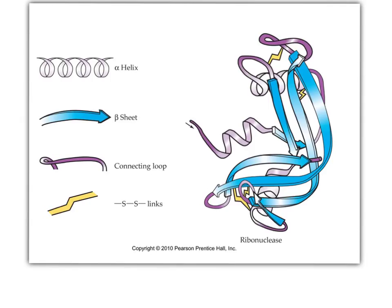The tertiary structure of proteins will use a combination of alpha helixes, beta pleated sheets, loops or random coils, disulfide bonds, and others.